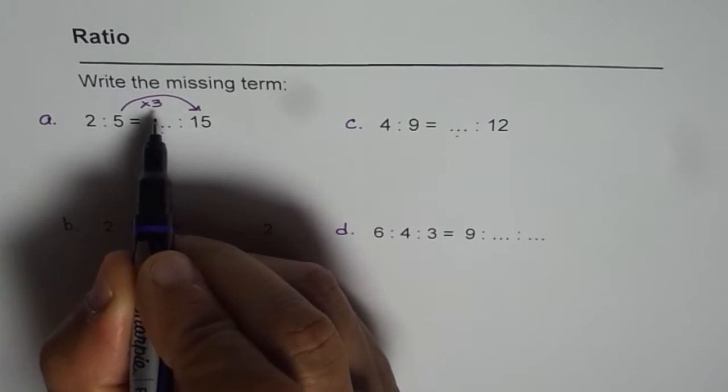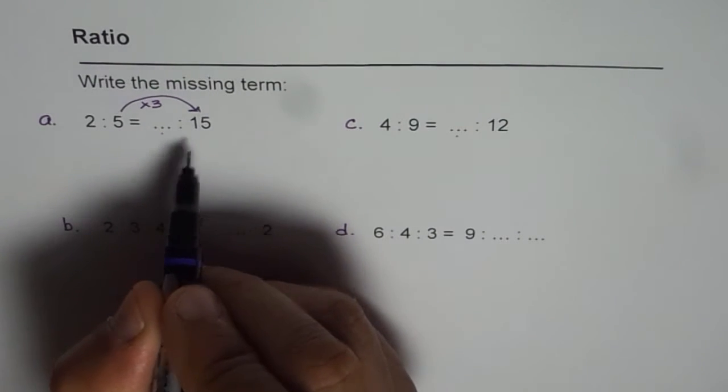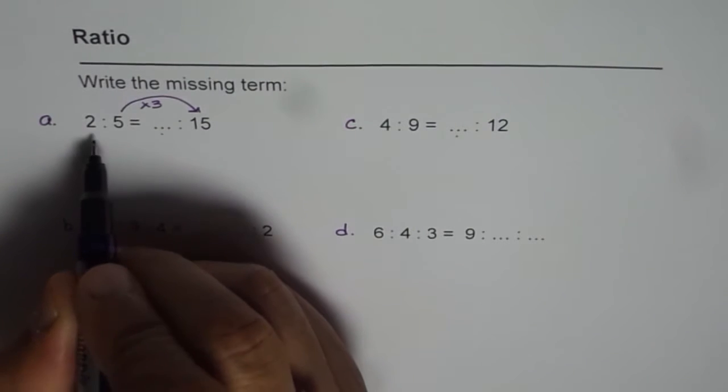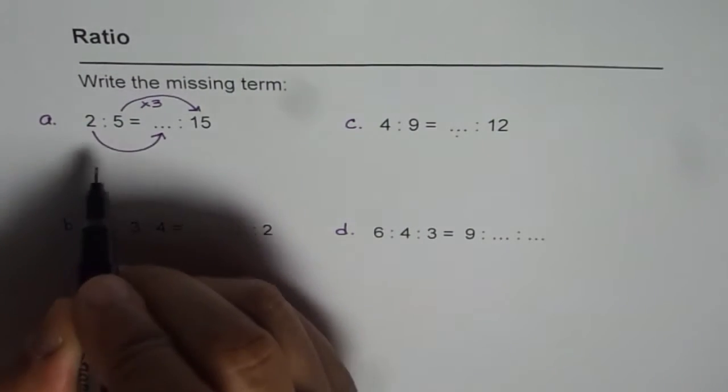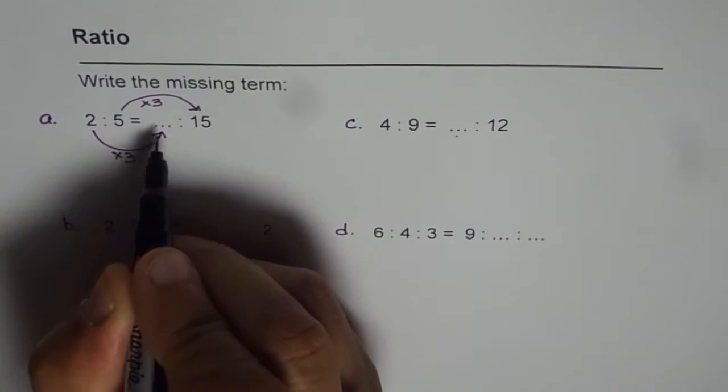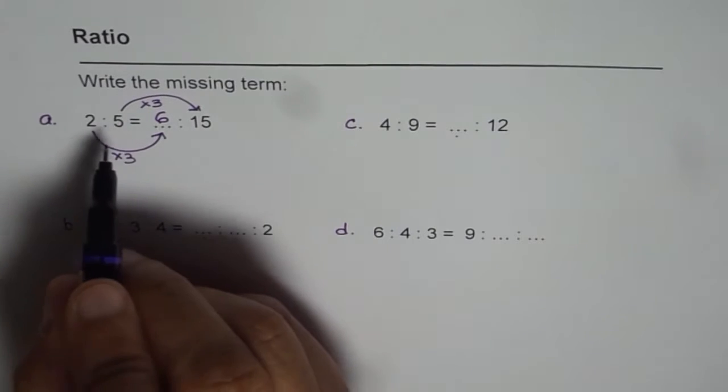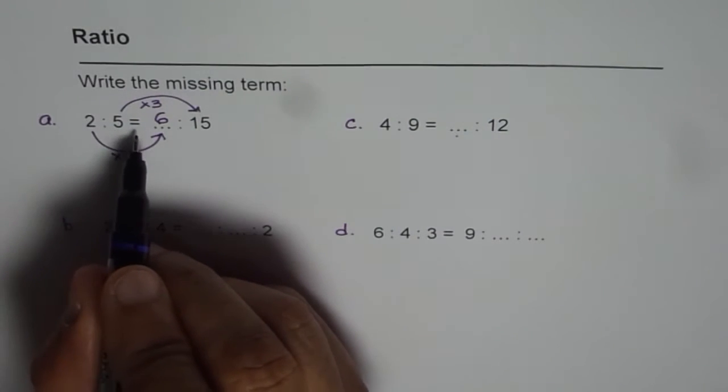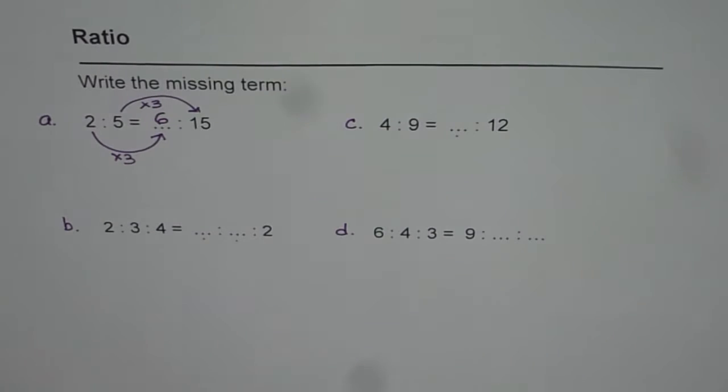So times 3 is the ratio in which these two set of numbers are related. So we can have 2 times 3 and that will fill this up. So 2 times 3 should come here. 2 times 3 is 6 and therefore we get 2 is to 5 equals to 6 is to 15. So that is one way of doing it.